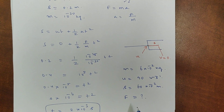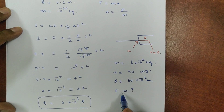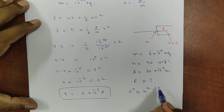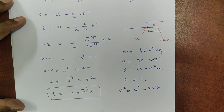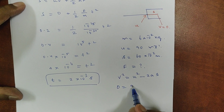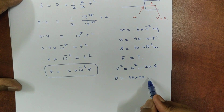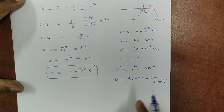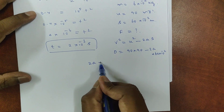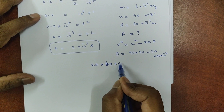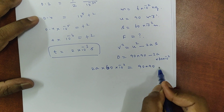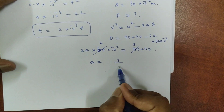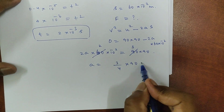To find the resistive force, we find acceleration first using v² = u² + 2as. Final velocity v is 0, initial velocity u is 90 m/s, and distance s is 60 × 10^-2 m. So 2a × 60 × 10^-2 = 90 × 90, giving acceleration a = (90 × 90) / (2 × 60 × 10^-2) = (3/4) × 90 × 10^2.